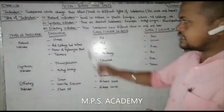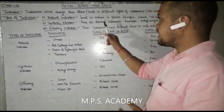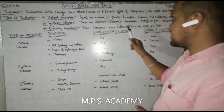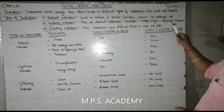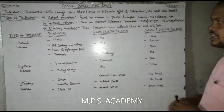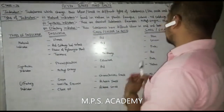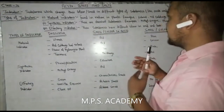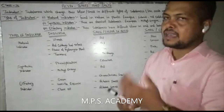Synthetic indicators are chemical substances. Examples include methyl orange and phenolphthalein. These are chemical substances used in the lab.